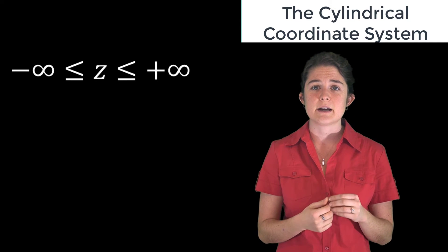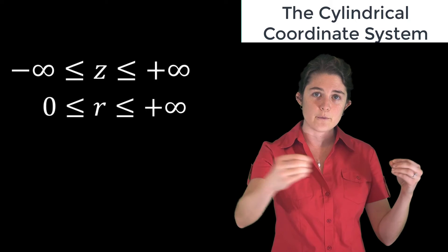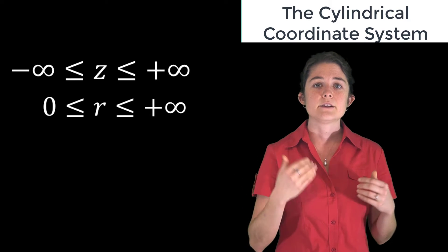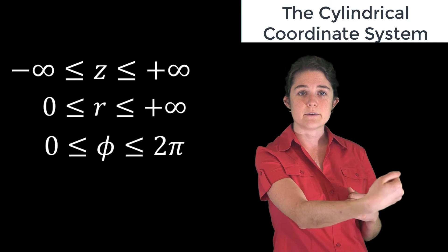Because of the way this system is defined, the range of R is constrained to positive values going outward from the z-axis, and the range of phi is from 0 to 2 pi, which keeps you once around the z-axis.